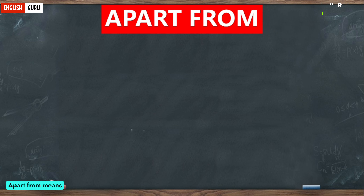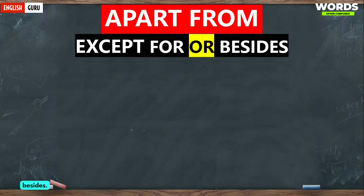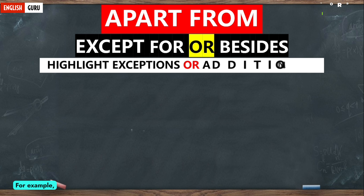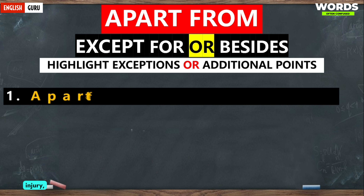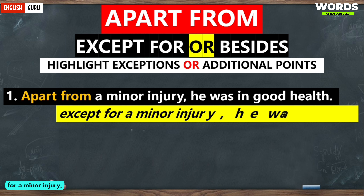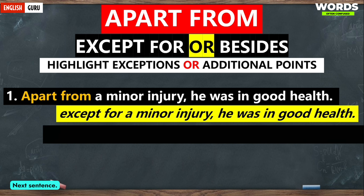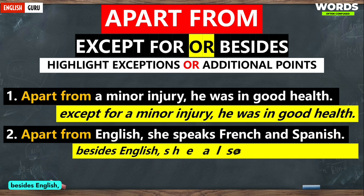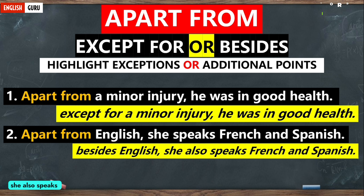Now let's understand 'apart from.' Apart from means 'except for' or 'besides.' It is used to highlight exceptions or additional points. For example, 'apart from a minor injury, he was in good health' means that except for a minor injury, he was in good health. 'Apart from English, she speaks French and Spanish' means that besides English, she also speaks French and Spanish.